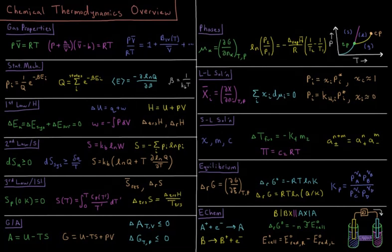We start off by looking at gas properties by examining the ideal gas equation from general chemistry, PV equals nRT, or PV bar equals RT where V bar is the molar volume of the gas. We can then extend that to the van der Waals equation of state which includes a parameter for the attractions between molecules A and the repulsions between molecules B.